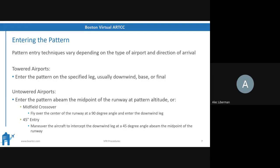If you're told by ATC to enter base, you have to enter the base. You could request a downwind entry, but if you're told to enter the base, you must. The question was: if flying into a towered airport and told by ATC to enter the base leg, can you just enter on the downwind leg? No, you can't. There's probably a reason why they gave you a base entry. If you're inclined to enter on the downwind, request it and ATC will approve it if they can.